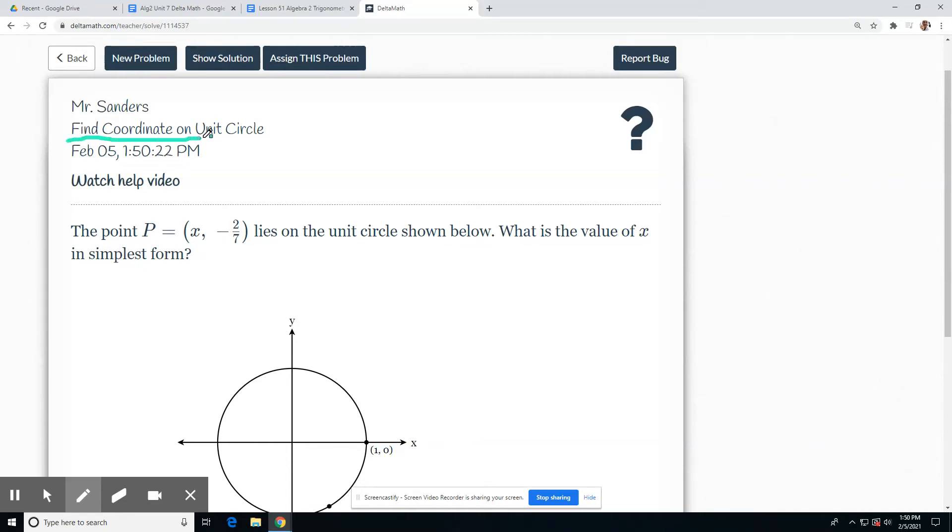We are trying to find coordinates on the unit circle. They're saying the point P is this right here. It lies on the unit circle shown below. What is the value of X in simplest form?